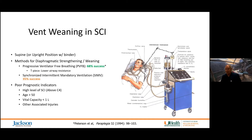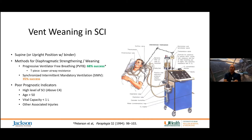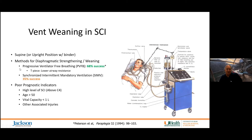Peterson reported in the early 1990s that vent weaning should be done in a supine position; if upright, the patient should have an abdominal binder. One of the major issues I've seen at several institutions is that people forget to use the abdominal binder — it's relatively inexpensive but significantly improves the ability to wean off a ventilator — along with assist control progressive ventilator-free breathing.